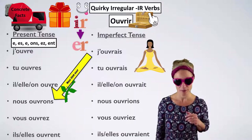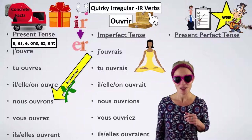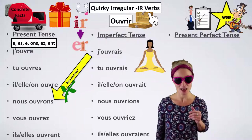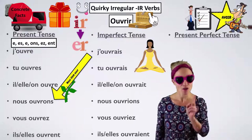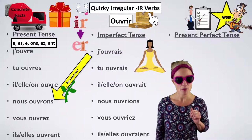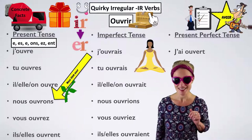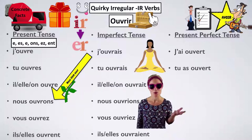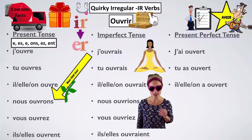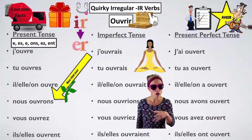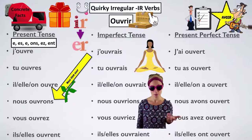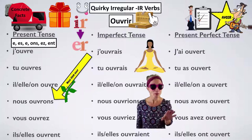And just for revision, let's look at the present perfect. It's a normal verb — it takes avoir as the auxiliary, although it does have an irregular past participle. It's 'ouvert': j'ai ouvert, tu as ouvert, il/elle/on a ouvert, nous avons ouvert, vous avez ouvert, ils/elles ont ouvert. 'Ouvert' also means 'open,' as in when the shop is open — quite often adjectives are the same as the past participle in English and in French.